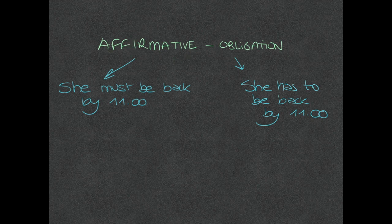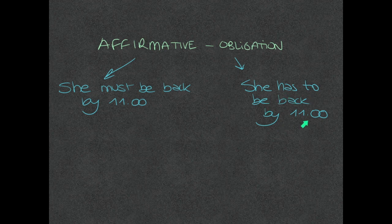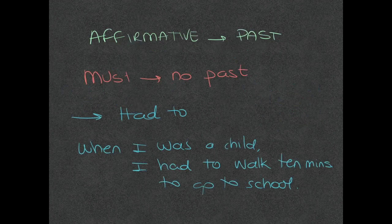If you mean to say that there is an obligation in the affirmative, you could choose either 'must' or 'have to', because they mean roughly the same — there is a slight difference, but they mean roughly the same. So you could say 'she must be back by eleven' or 'she has to be back by eleven'.